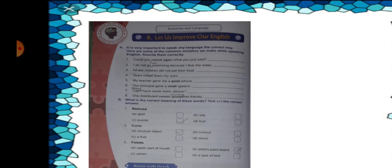Curio means an unusual object. Number A. Now we are moving to number three. Palette.